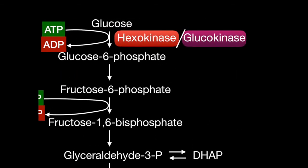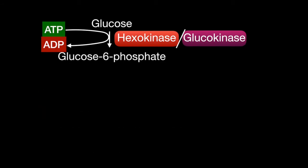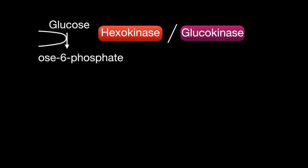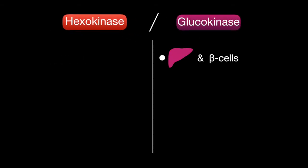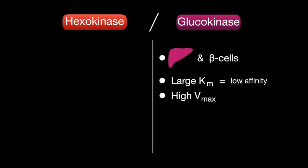Hexokinase and glucokinase catalyze the same reaction — phosphorylating glucose to produce glucose-6-phosphate — but not in the same location in the body, and they have different enzyme kinetics. Glucokinase is used specifically by the liver and the beta cells of the pancreas. It has a larger KM, giving it a lower affinity for glucose, and a higher Vmax. This means it acts only after large increases in blood glucose, like after a meal.